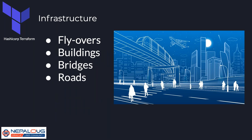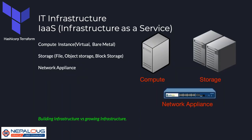In general, infrastructure means physical infrastructure — flyovers, buildings, bridges and roads. In the same way, IT infrastructure means compute servers, which may be virtual or bare metal. IT infrastructure also includes storage — file storage, object storage, block storage — and network appliances like routers, switches, bridges, and load balancers.